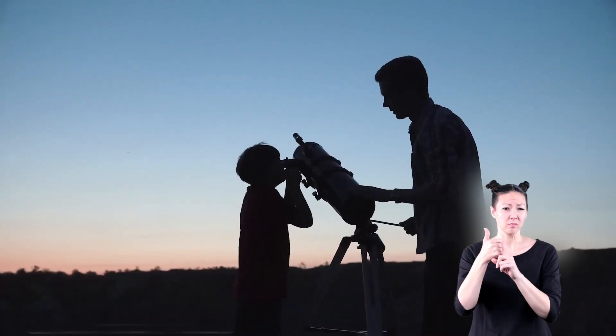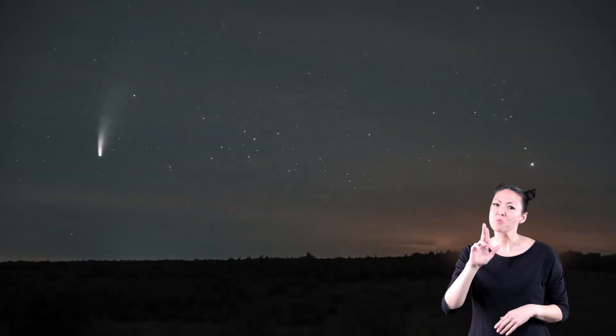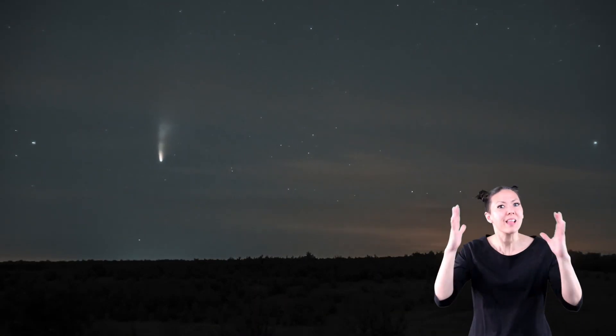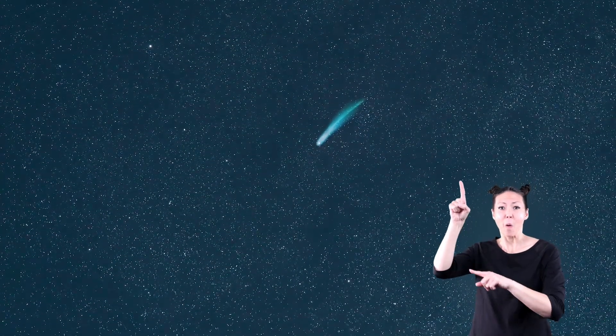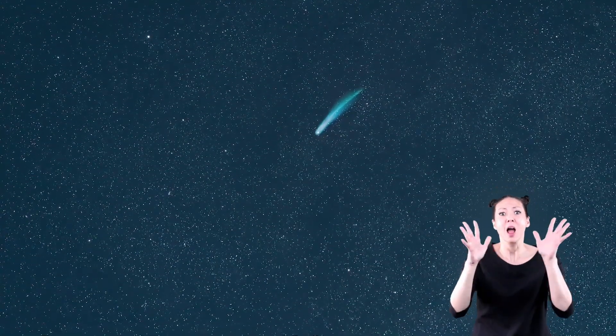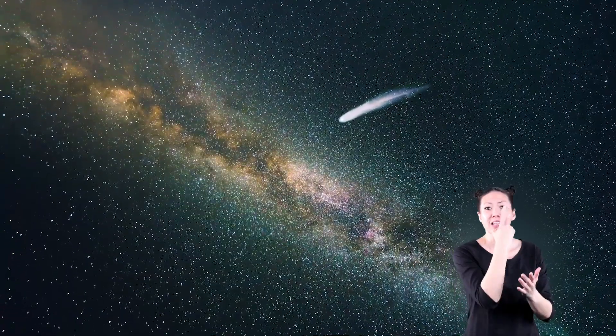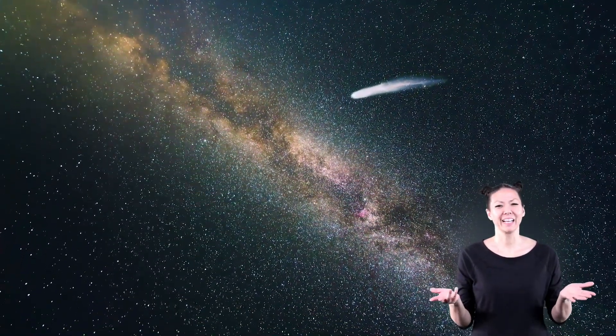The comets that are closer to Earth can be seen with a regular telescope. It is rare, but sometimes a comet is bright enough to be seen without a telescope. You might even be lucky enough to see a comet as bright or even brighter than the brightest stars. If you get a chance to see one of those, it will be a once in a lifetime opportunity.